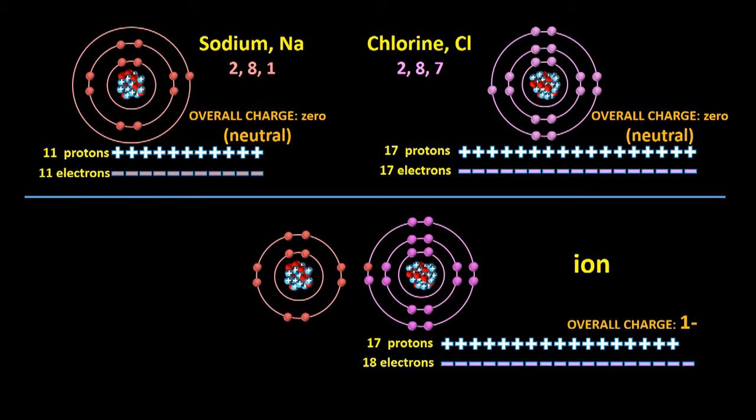An ion is an atom which has either gained or lost electrons. We say that the chlorine, or Cl atom, has become a Cl minus ion, and we write a minus sign as a superscript to indicate the charge. It also gets a name change from chlorine to chloride, so the Cl minus ion is called a chloride ion. Its electron configuration is now 2,8,8.